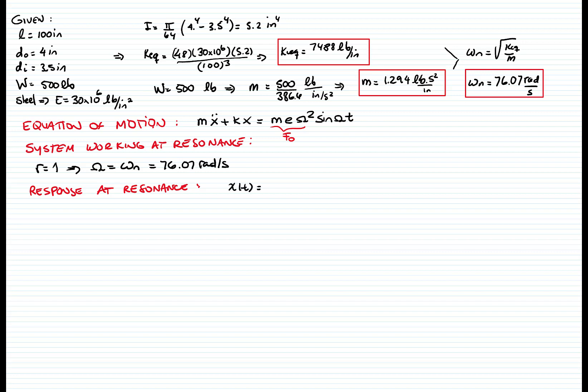The response for resonance is F sub 0 over the constant of the spring equivalent, times omega n times t, divided by 2, sine omega n t. And as we said, F sub 0 is m e omega squared.